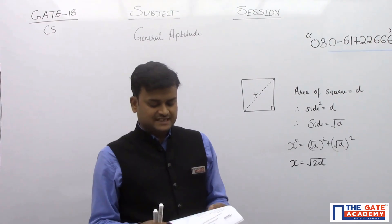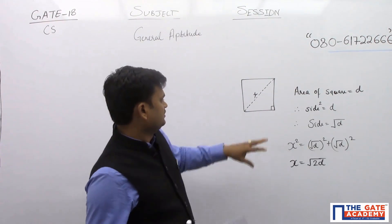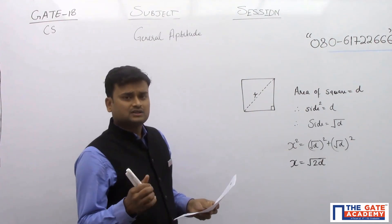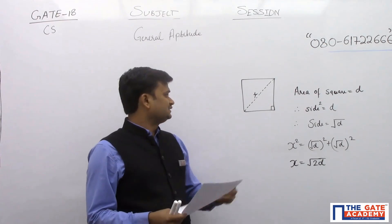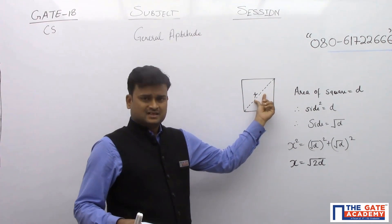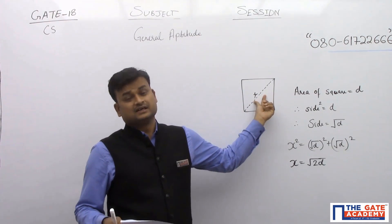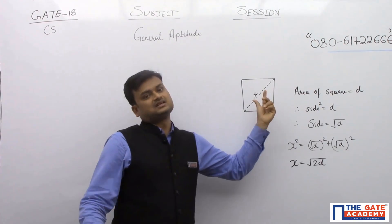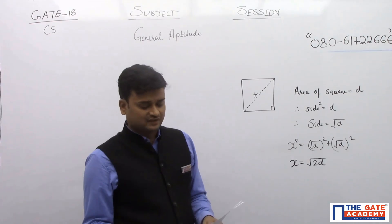Now the question says that there is a circle in which this square is inscribed. So what is the point that this diagonal is the diameter of the circle. This diagonal is the diameter of the circle.